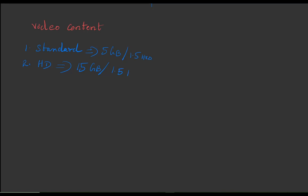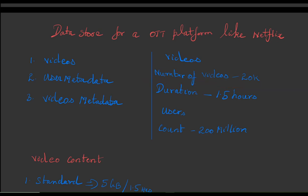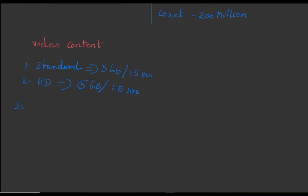Now let's find out the memory that is going to be used to store these videos. As we already assumed the total number of videos in Netflix would be 20K. So we have to multiply 20K into 20 GB by summing up standard and HD quality videos, which gives 400,000 GB. On converting this into TB it will be 400 TB. So we have to store 400 TB of video content to run an OTT platform like Netflix.